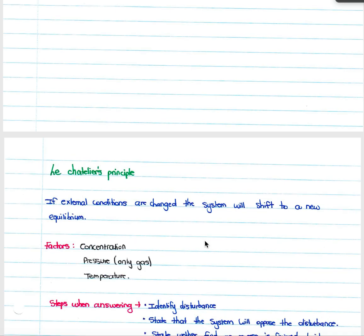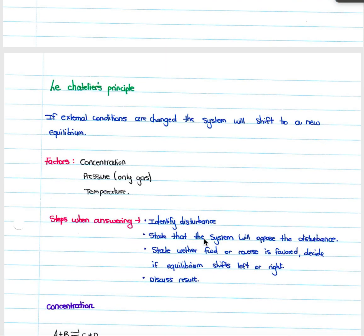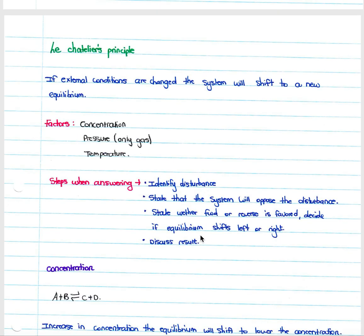Next, it is important to look at Le Chatelier's principle when studying equilibrium. If external conditions are changed, the system will shift to a new equilibrium. There are a number of factors we can change to shift the equilibrium. For chemistry you will need to identify the disturbance, understand what it affects, and determine how the equilibrium will shift. The factors that change equilibrium are concentration, pressure (only when reactants are in gas form), and temperature.